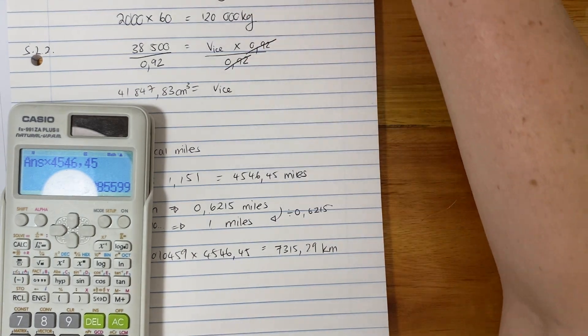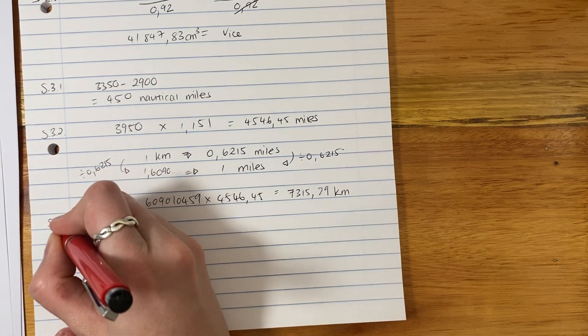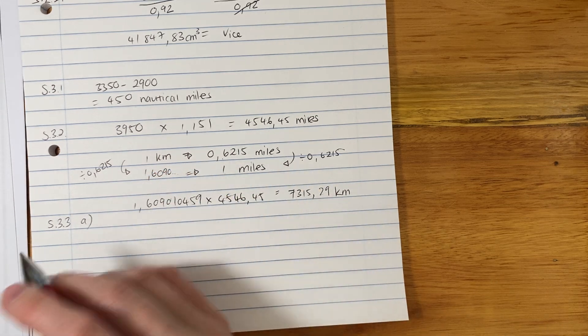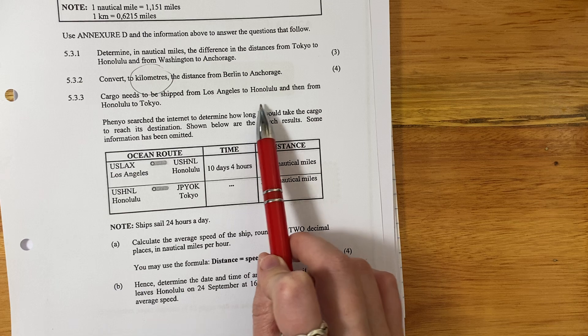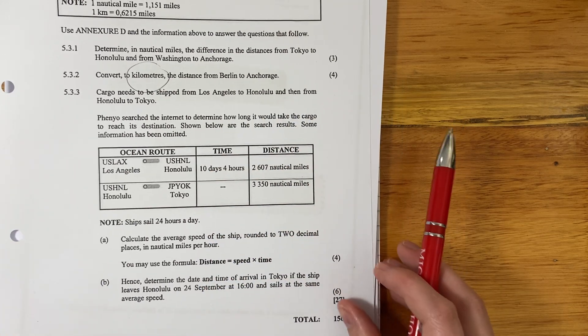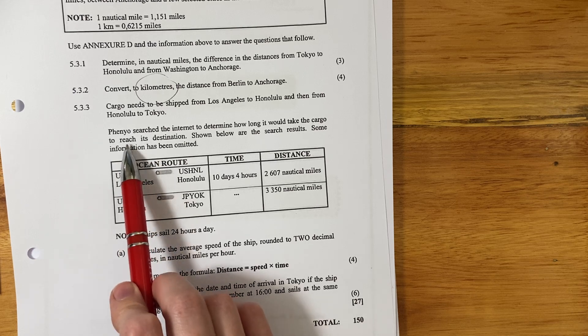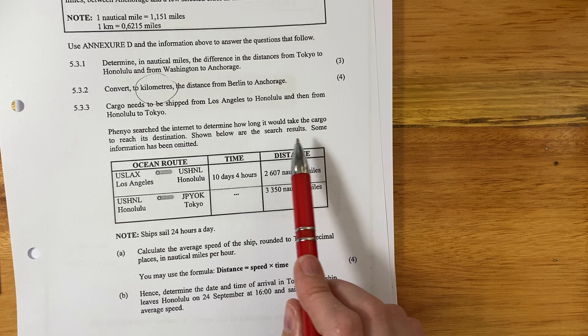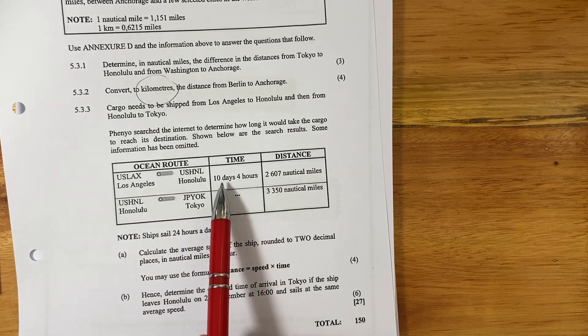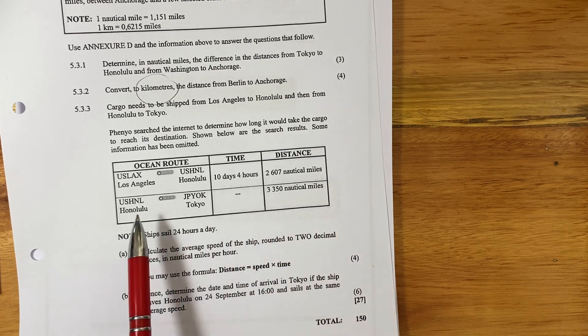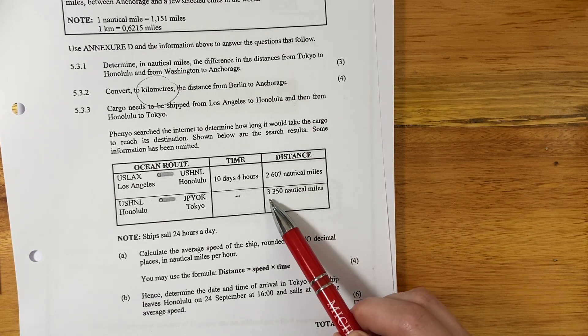We are then now going to move on to our very last question. And these questions are going to really make us think, which is good. We like to think. So let's continue. Last question here. Cargo needs to be shipped from Los Angeles to Honolulu, and then from Honolulu to Tokyo. Peño searched the internet to determine how long it would take the cargo to reach its destination. Shown below are the search results. Some information has been omitted. So we have from Los Angeles to Honolulu, it's going to take me 10 days and four hours, and that's how many nautical miles. From Honolulu to Tokyo, we don't know what the time is. So we know that we're going to have to work out the time.